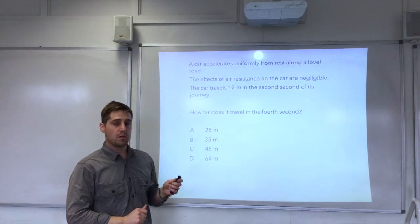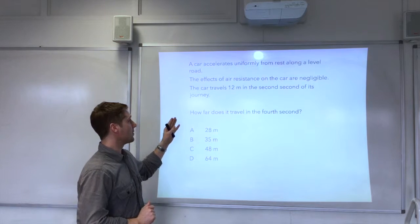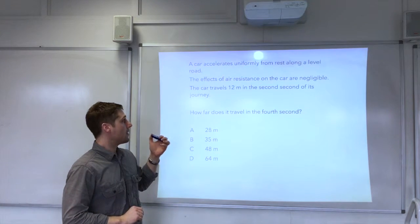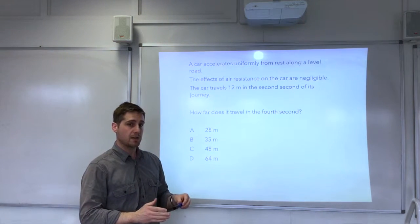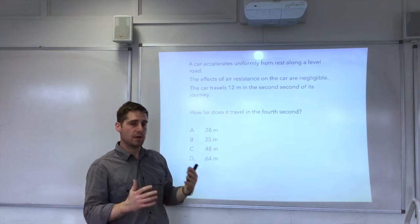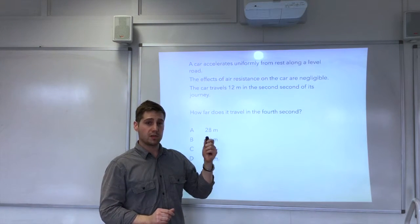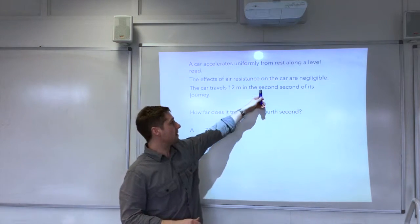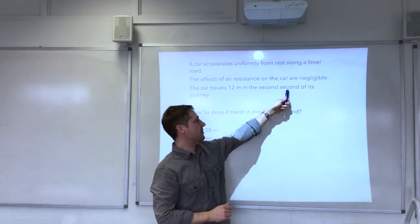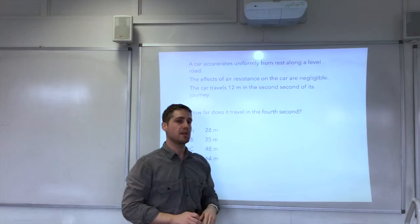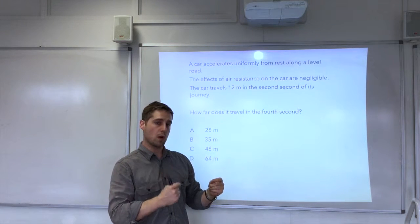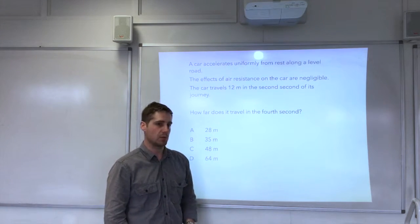A car accelerates uniformly from rest along a level road. The effects of air resistance on the car are negligible. The car travels 12 metres in the second second of its journey. Now I think that repetition of second here, whilst if you think about it you can understand it, some students will probably find it quite confusing. So this first instance of second means the second instance of something and this second instance of second is a reference to the unit of time. So the second second means between one and two seconds and I'll draw a diagram to show you what I mean.